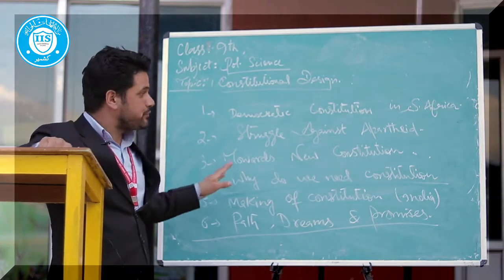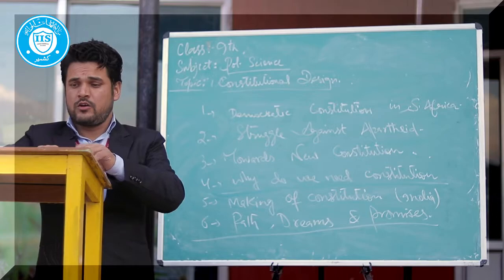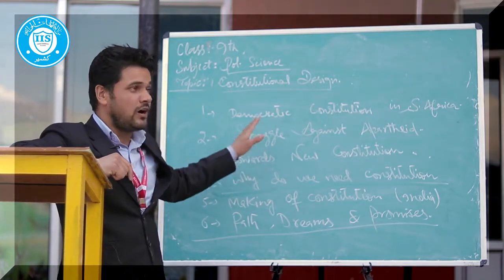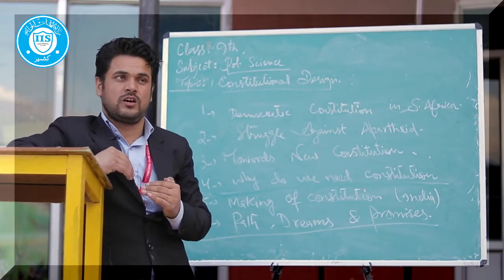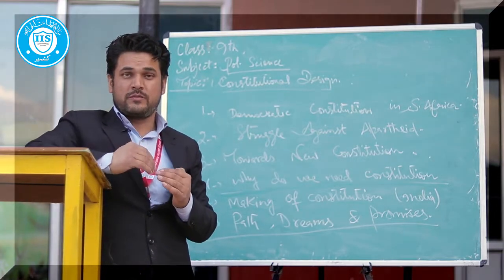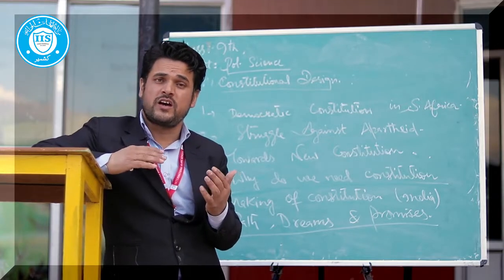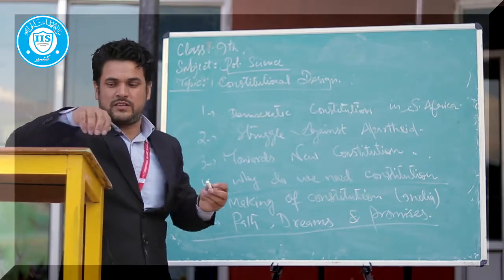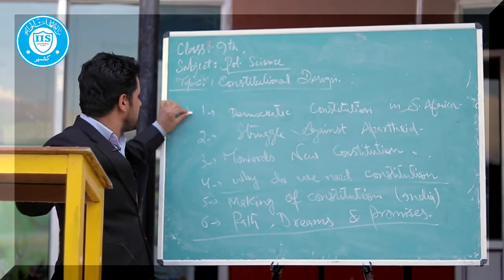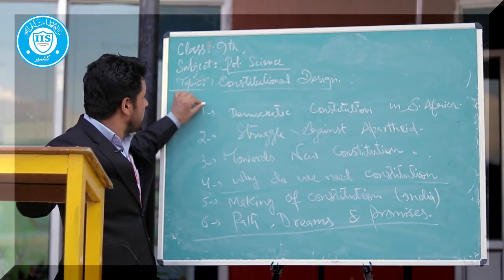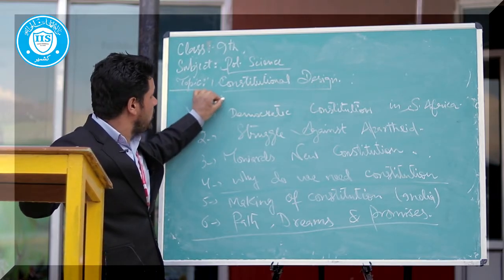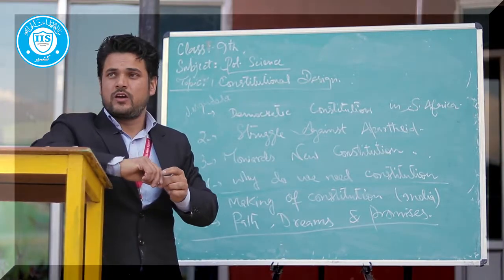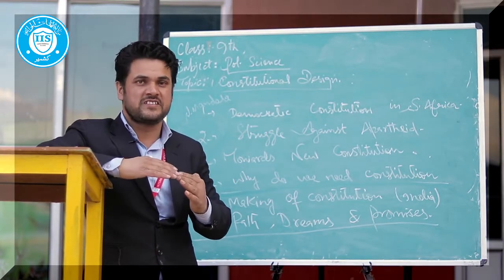The first topic is constitutional design — the democratic structure in Africa. In African history, there was a hero who became a symbol of democracy. There is a prominent leader named Nelson Mandela. Nelson Mandela is a very big hero in the African freedom struggle. He struggled greatly against the apartheid regime.